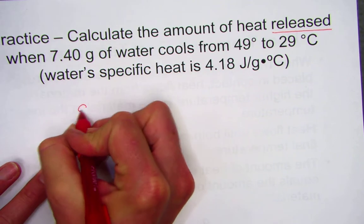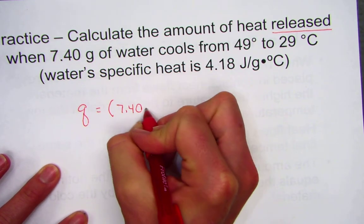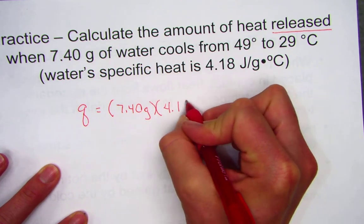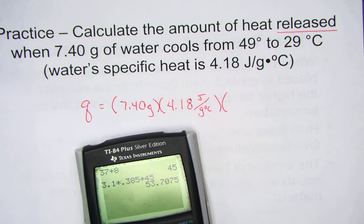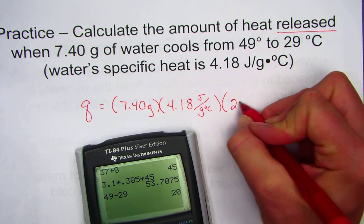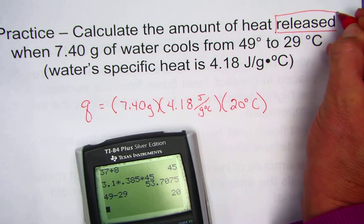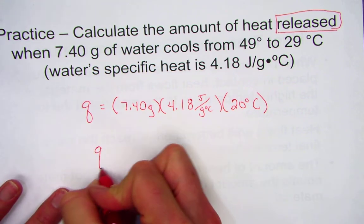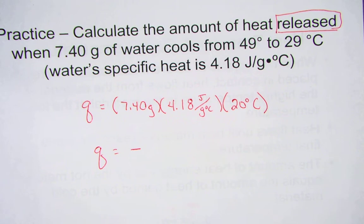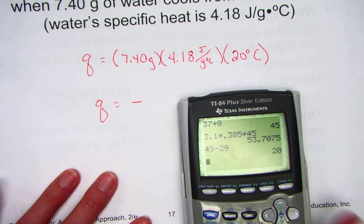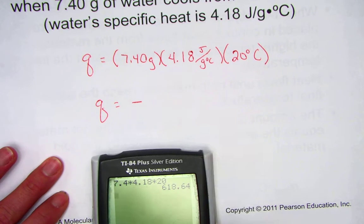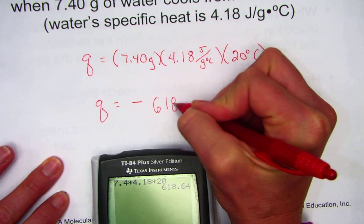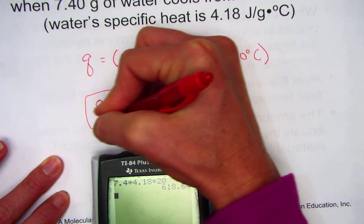Calculate the heat released, so we're solving for Q. The mass given is 7.40 grams, the specific heat is 4.18 joules per gram degree Celsius, and the change in temperature — the difference between 49 and 29 is 20 degrees. Knowing that this is an exothermic process, Q is going to be a negative value, releasing heat from the system to the surroundings. Calculating: 7.4 times 4.18 times 20 — we find 618.64 joules of energy being released from this system.